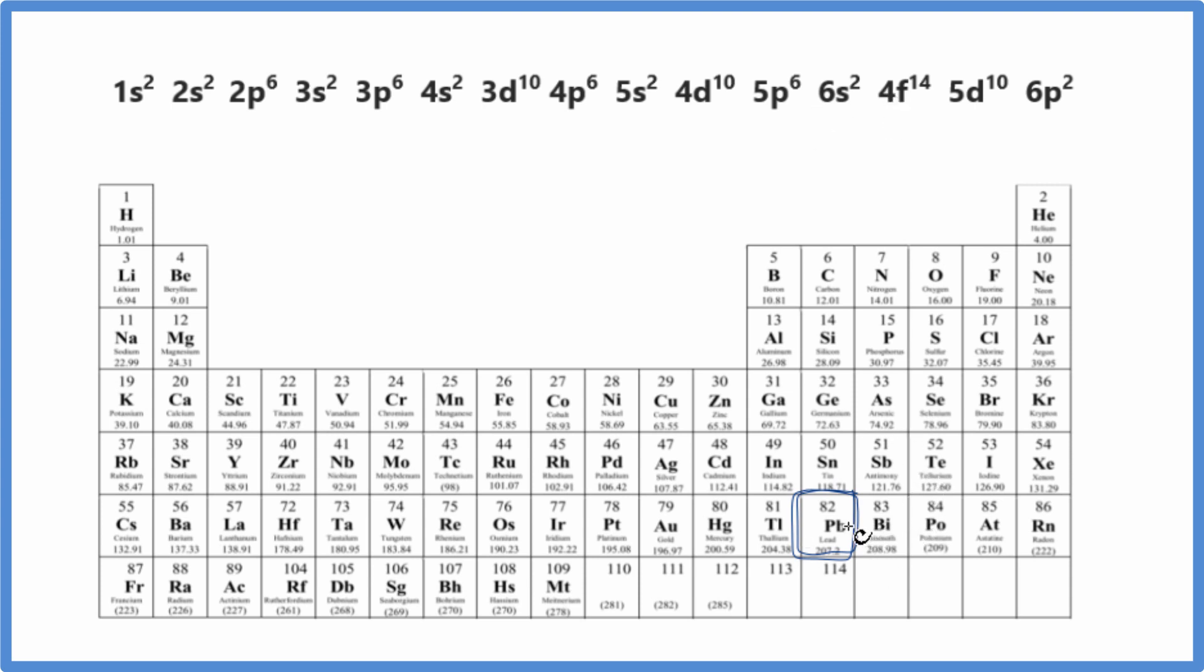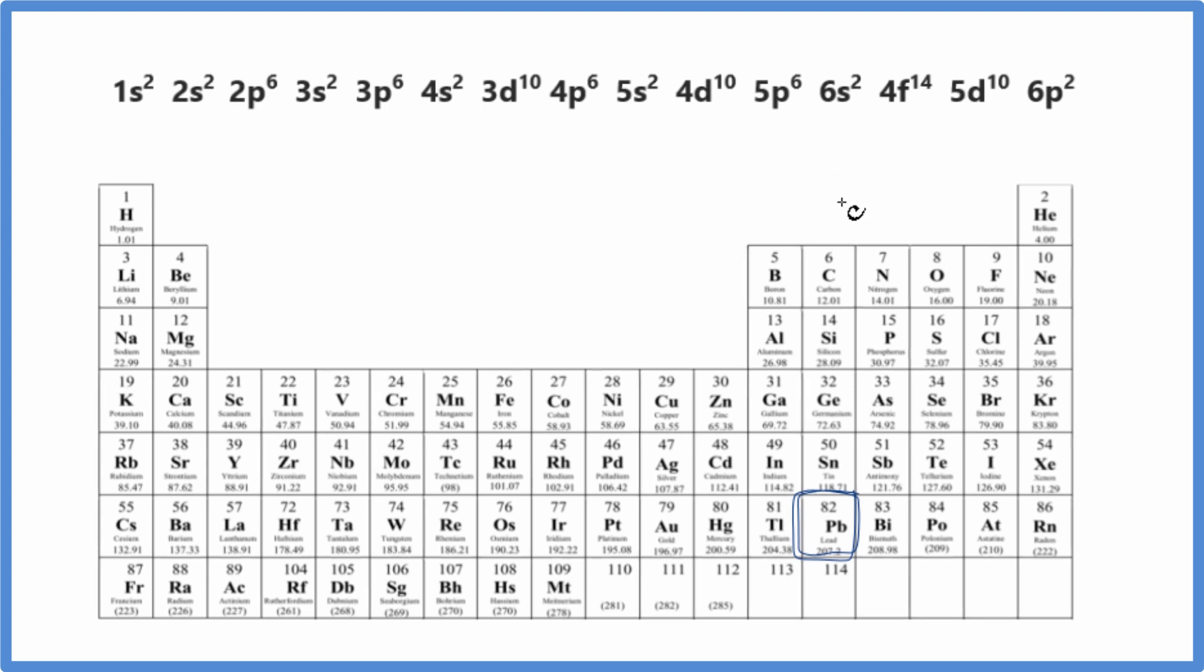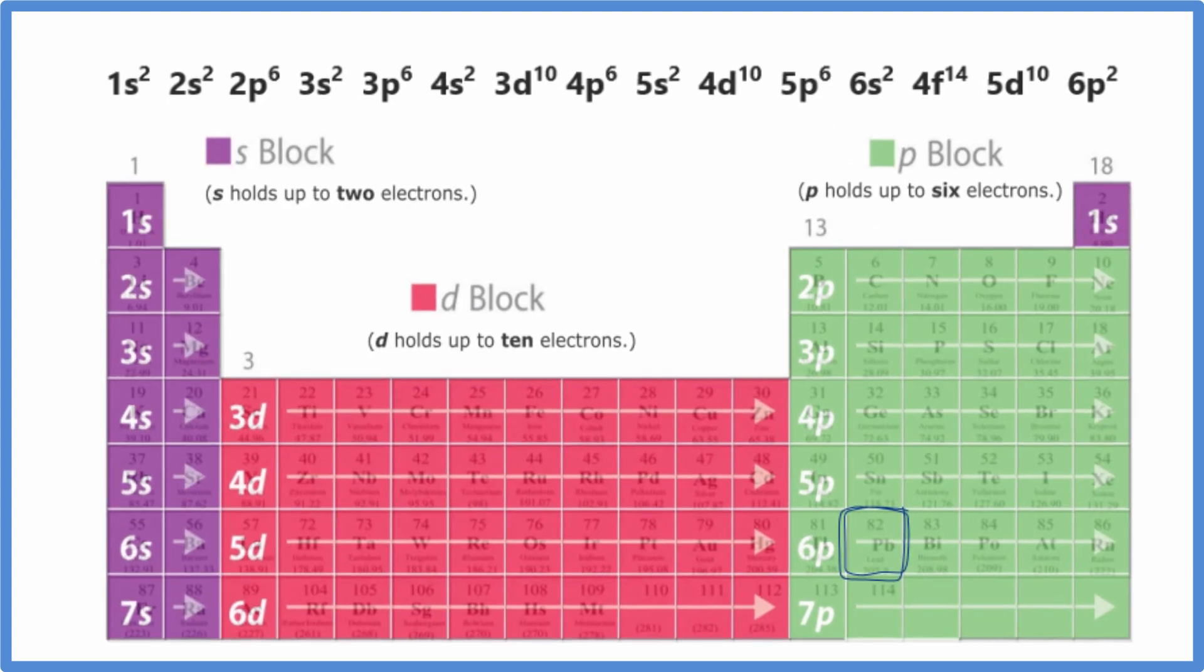So based on this, one way we can figure out what this last term here should be, just to check our work, is to think of this in terms of orbital blocks on the periodic table. So we think about the periodic table in terms of these orbital blocks. We have S, D, P. The F would be down at the bottom.